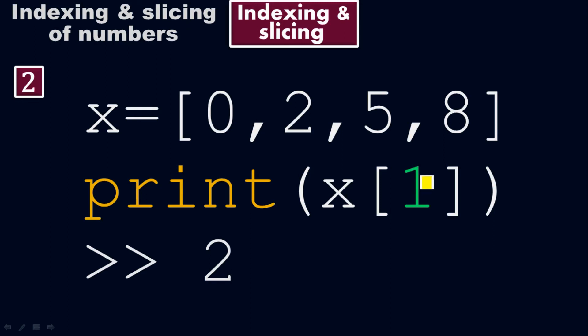If you put 2 at index 2, we have 5 here because 0, 1, 2. At index 2, there will be 5. At index 3, there will be 8.